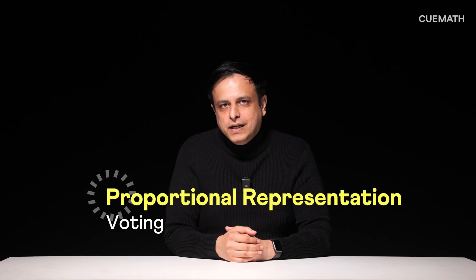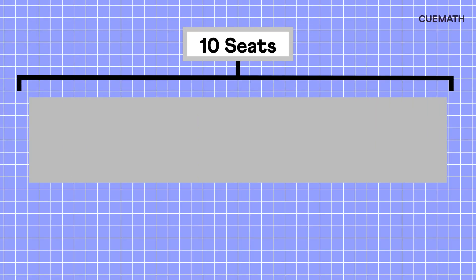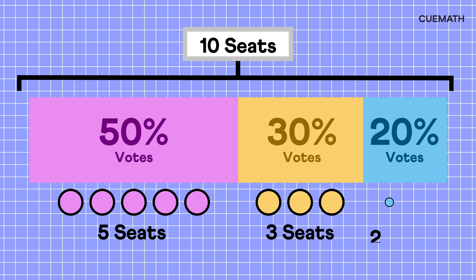Another new approach is proportional representation, where each party gets seats based on their vote share. For example, in a district with 10 seats, a party with 50% of the vote gets 5 seats, one with 30% gets 3 seats, and one with 20% gets 2 seats.